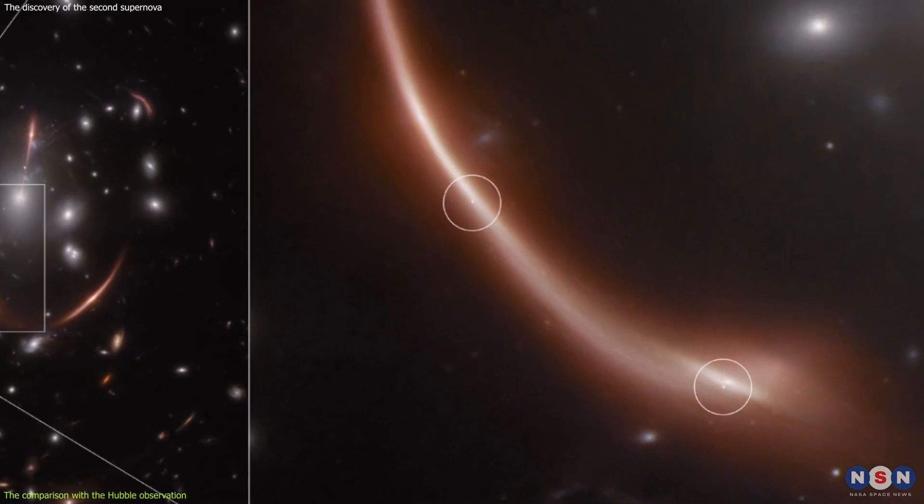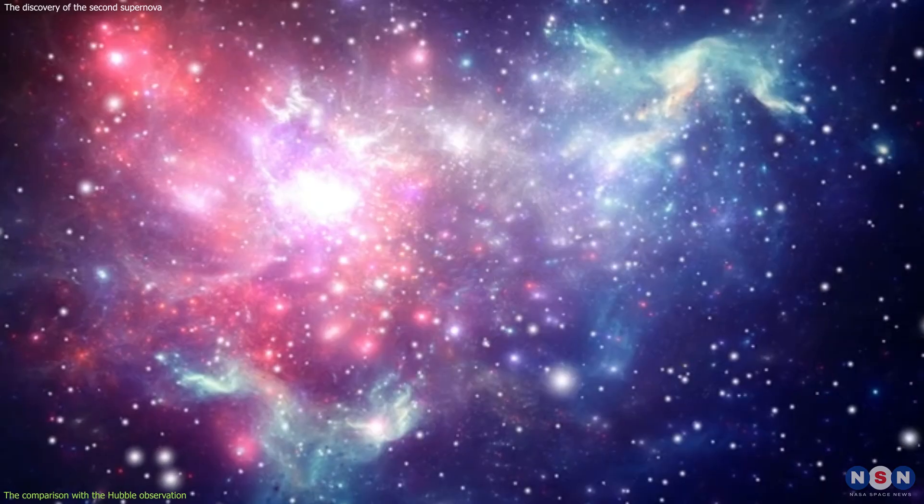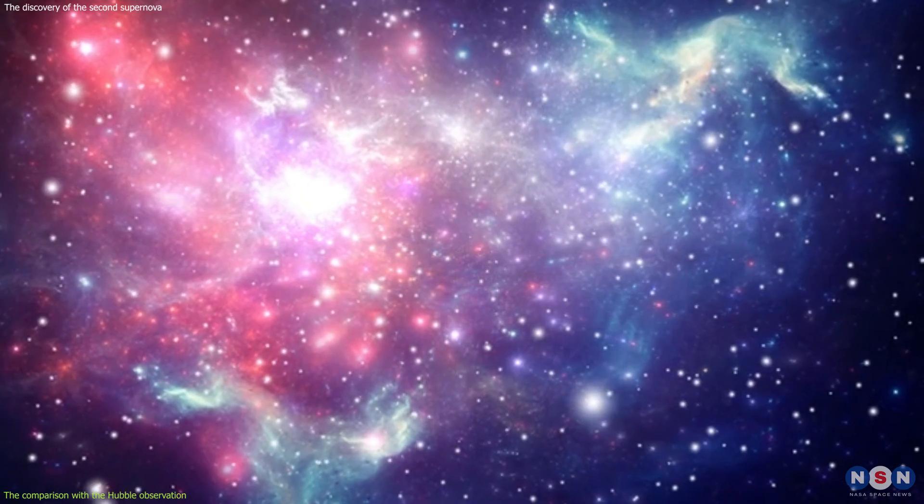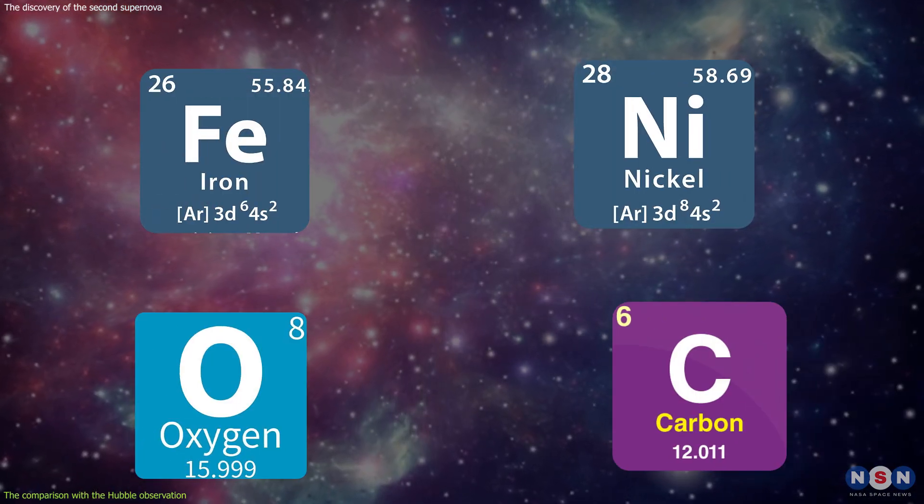By analyzing the color and the spectra of the supernovae, we can identify the type and the subtype of the supernovae, and the elements that it synthesizes, such as iron, nickel, oxygen, and carbon.